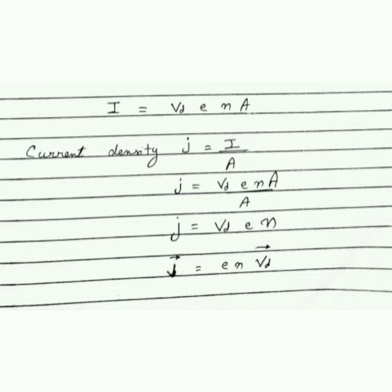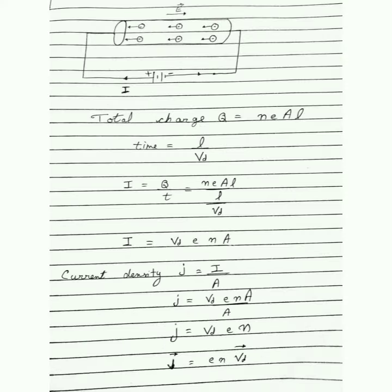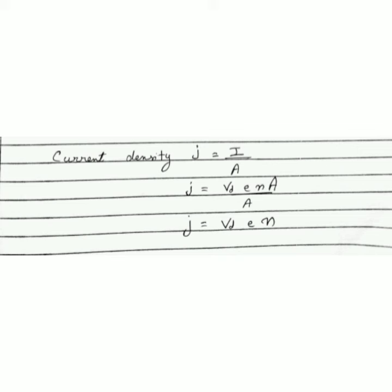Here we can also find current density. The current density formula is J equals I upon A. So substituting I = nAevd into J = I/A, the A cancels, and the current density formula becomes J = nevd.